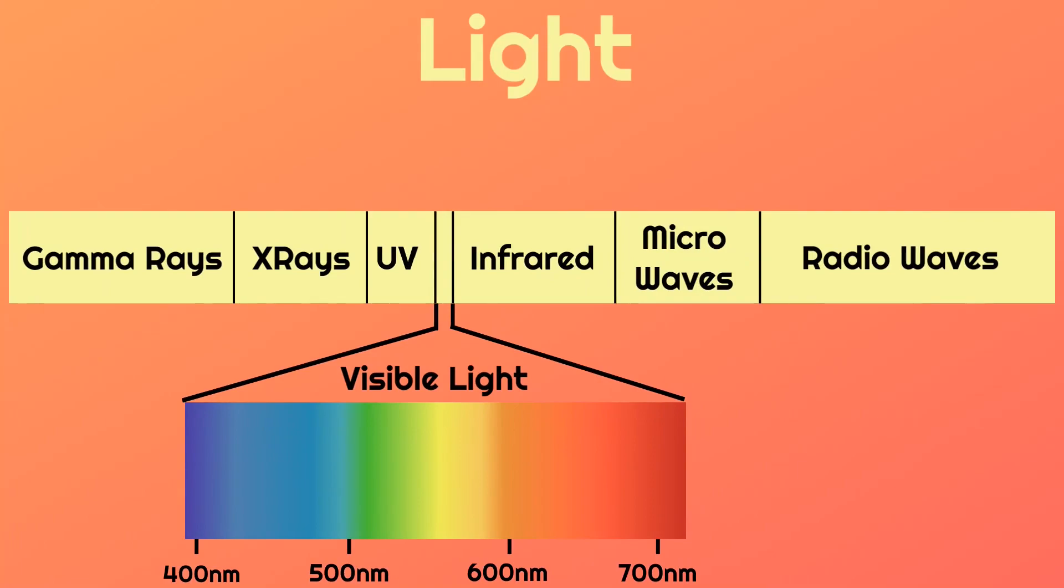Visible light is the range of wavelengths on the electromagnetic spectrum that can be visually detected by the average human eye, and it is approximately 400 nanometers, which is what we perceive as violet, to 700 nanometers, which is what we perceive as red.